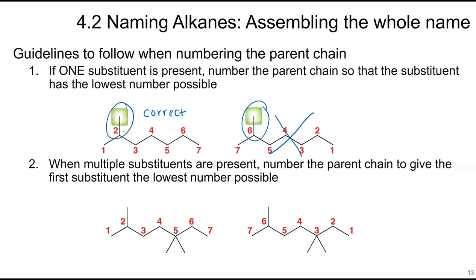If you have multiple substituents, number the parent chain to give the first substituent the lowest number possible. For example, numbering that gives positions two, five, five is correct versus three, three, six — because the first substituent should have the lowest number possible.